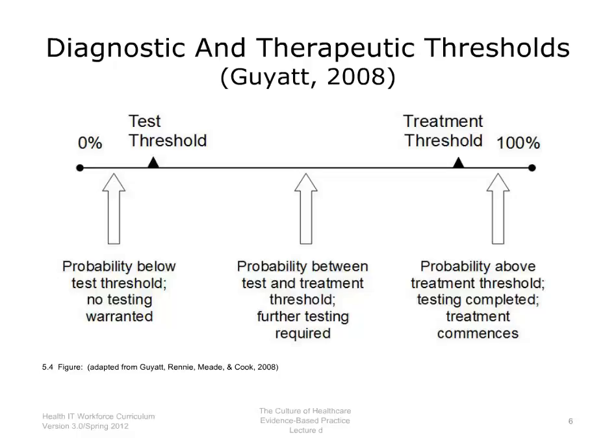This is different for different diseases, and the treatment threshold depends on both the benefit and the risk of the treatment. If the treatment for a serious disease has high benefit and relatively low risk, the treatment threshold may actually be lower than if it is a treatment that potentially has a lot of adverse effects.